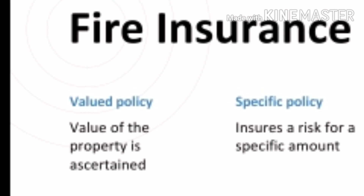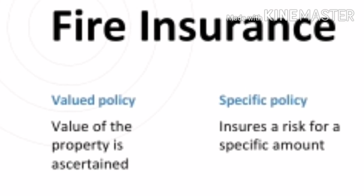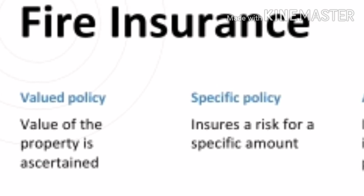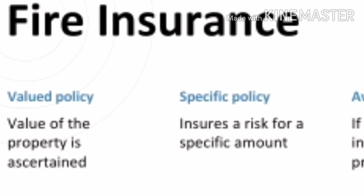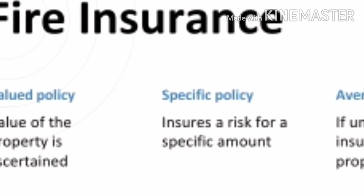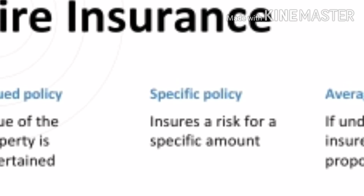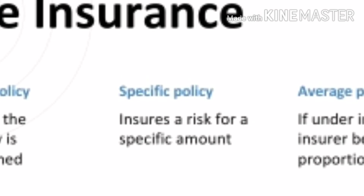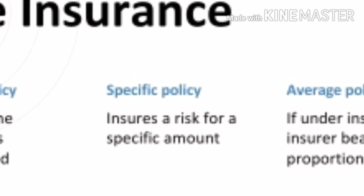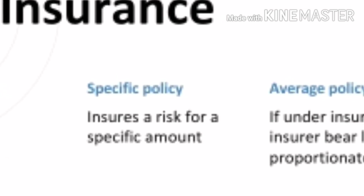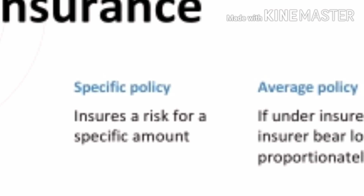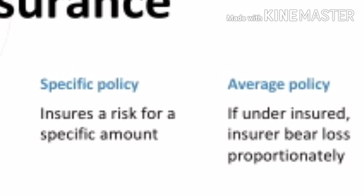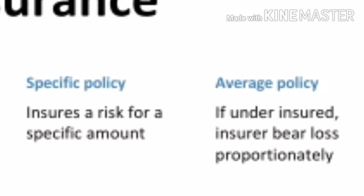Based on the terms and conditions of the fire insurance contract, fire policies can be of different types. First is valued policy. Under this, the value of the property is ascertained and agreed between the parties at the time of entering into the contract, and in case of loss this agreed amount will be given as compensation without considering the actual loss. Second is average policy. This is the most common type of fire insurance policy. Under this, insurance coverage will be given for a specific amount, and in case of loss the insurance company will give compensation of actual loss up to this specified limit.